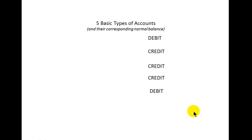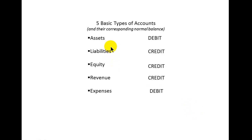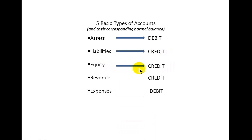Now let's talk about those five basic types of accounts and their normal balance. Assets normally have a debit balance. Liabilities normally have a credit balance. Equity accounts normally have a credit balance. Revenue accounts normally have a credit balance. And expense accounts normally have a debit balance.